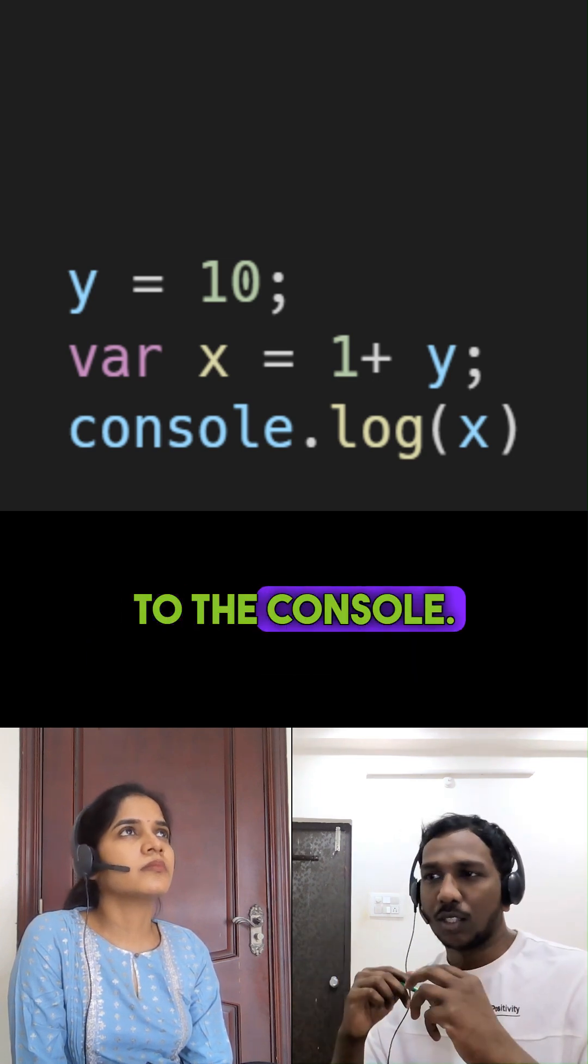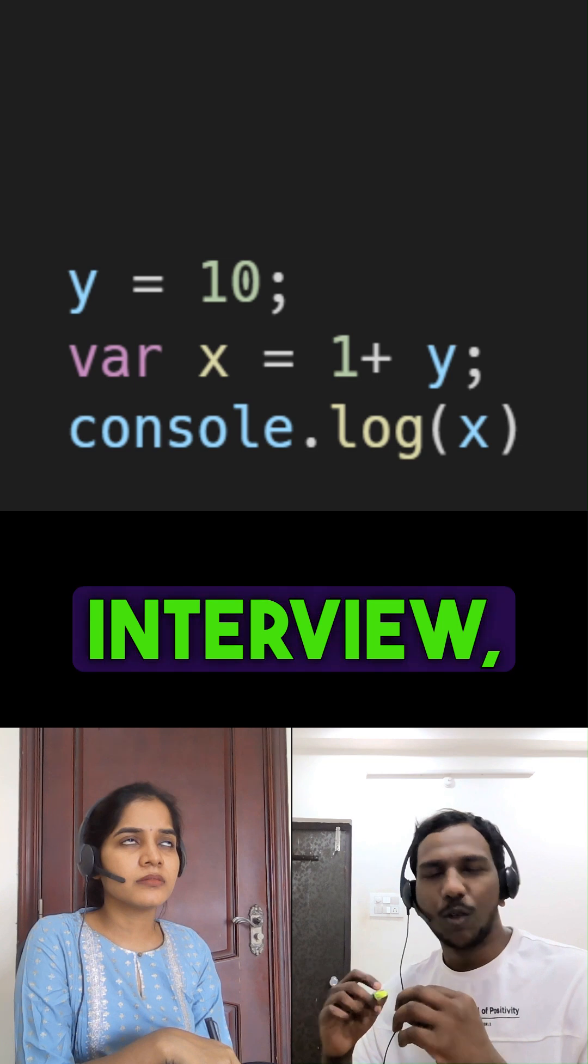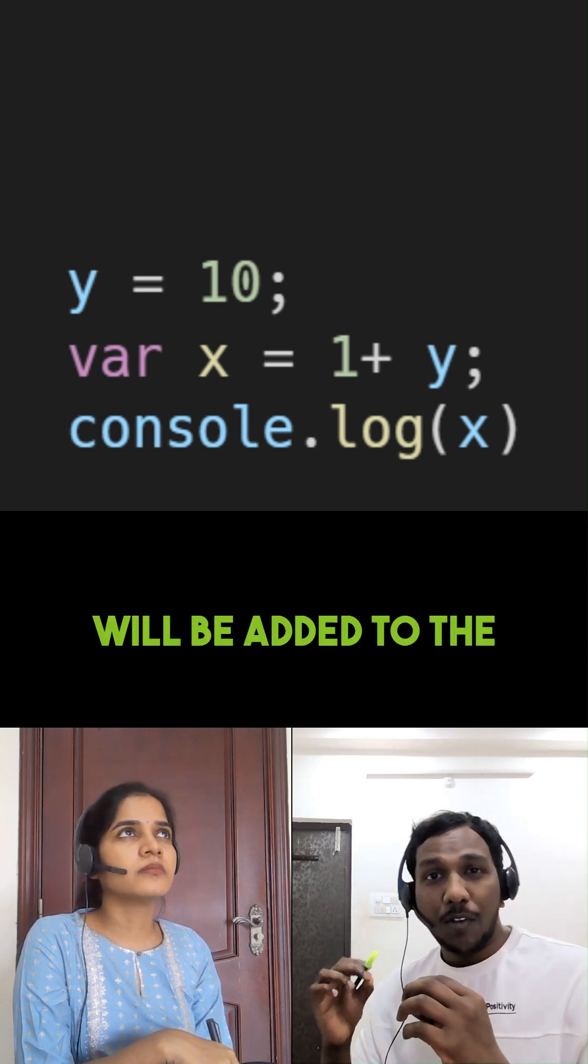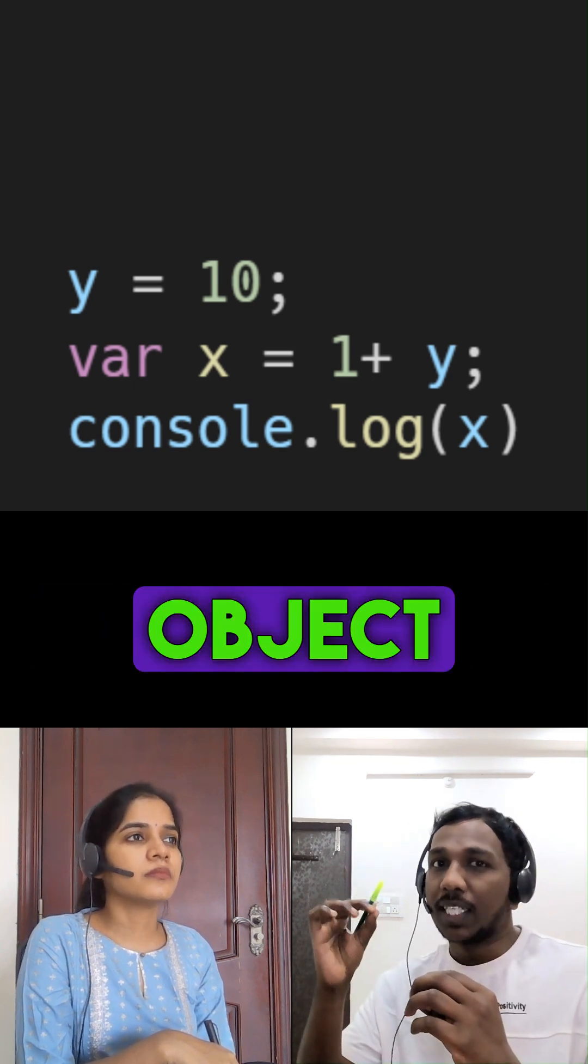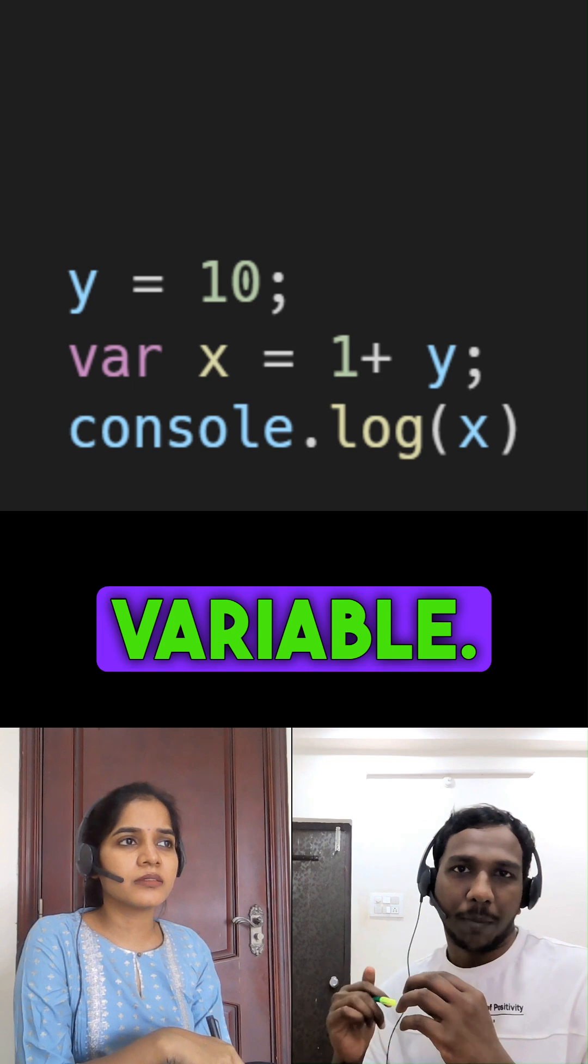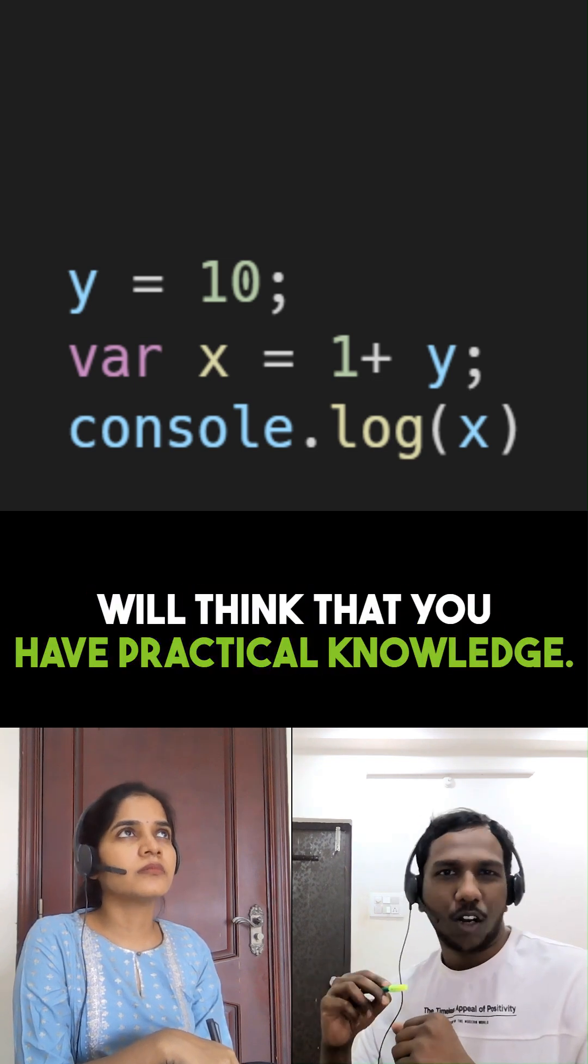Due to this, it will log 11 to the console. When you get the similar question in the interview, tell the interviewer that y will be added to the global object and it will be treated as a global variable. By telling this, they will think that you have practical knowledge.